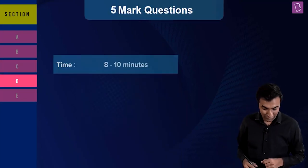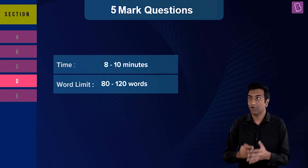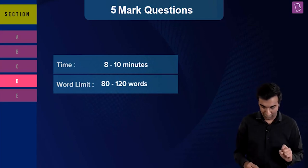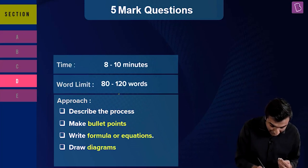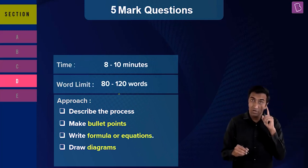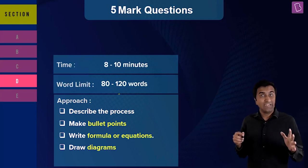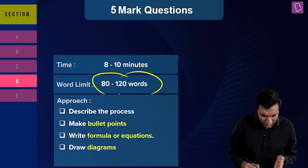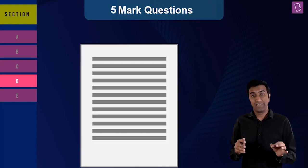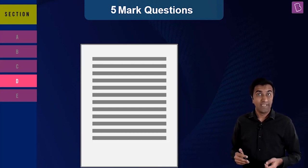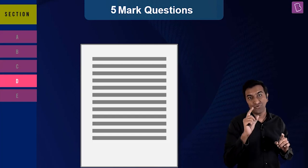On to five-mark questions. You take about eight to ten minutes on these questions. The word limit is given to you in the paper. What is extra here compared to three-mark questions is: make bullet points. Even though you have a lot of words that may fill almost an entire page, adding bullet points makes it easier for the examiner to read and also for you to check — which is equally important. You should have time to check everything you've done.